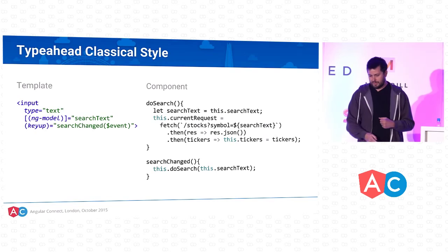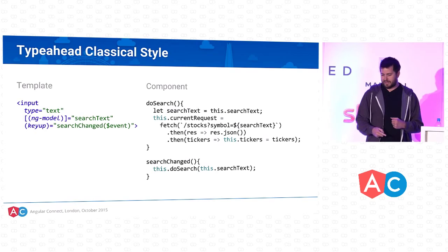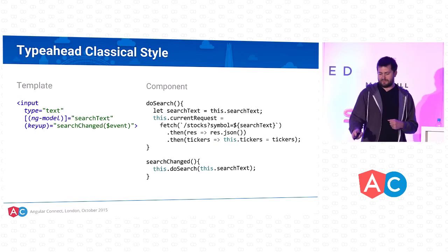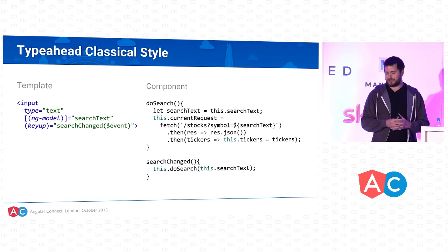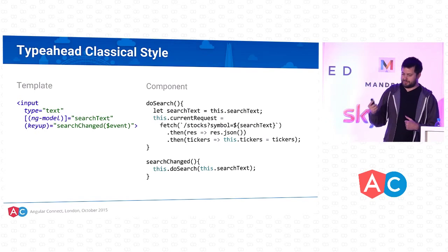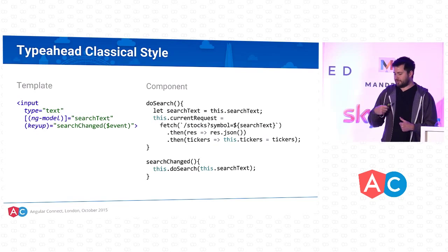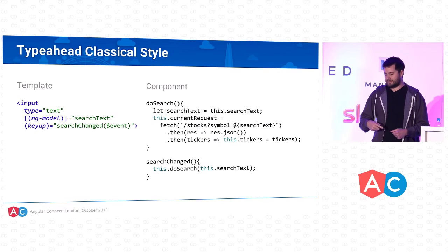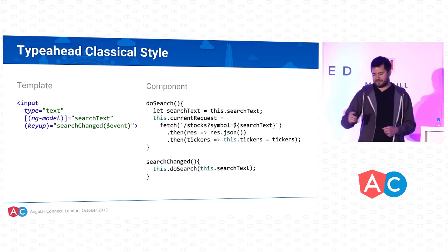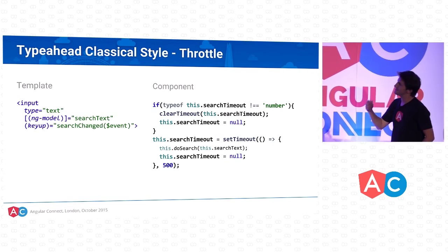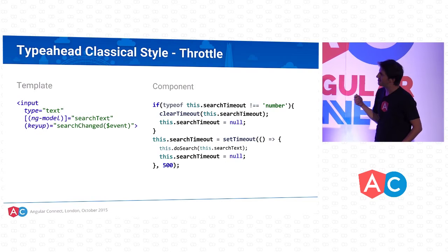Let's look at how you'd do this in Angular 2 using a more classical, object-oriented style. You'd start with an input that has an ng-model assigning to a property called searchText, an event binding to the keyup event calling the searchChange function, which delegates to a doSearch function. We fetch using the Fetch API, which is promise-based, transform the response to JSON, and assign the body back to the component to render in the view.